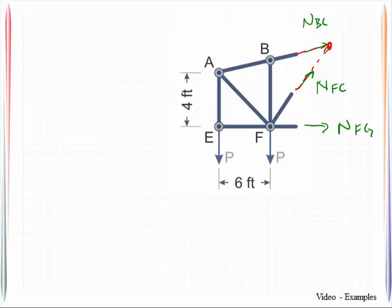In this case these two members intersect at joint C. So if I sum moments about point C what I will be left with is I'll be able to find the force in bar FG.